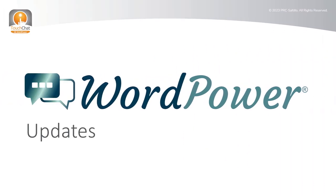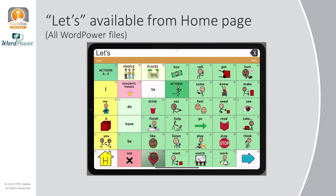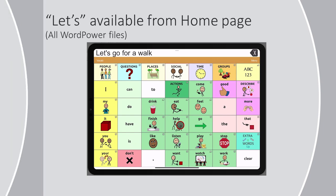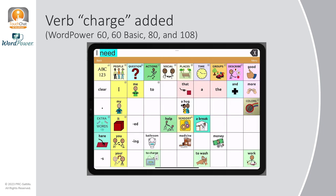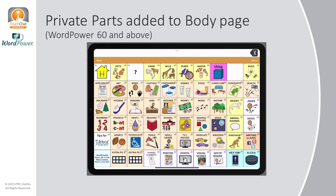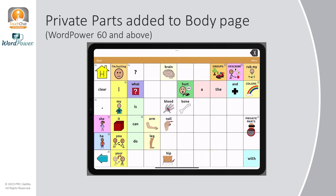There have been updates to some of the WordPower vocabulary files in Version 2.46. In all of the WordPower vocabulary files, you can now find the word 'lets' on the home page after you select clear. WordPower users can more easily tell you that they need to charge their device now. In WordPower 60 and above vocabulary files, buttons have been added to the body page to give AAC users a way to talk about the health and safety of their bodies.